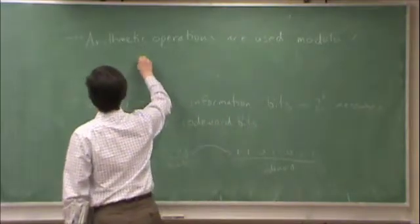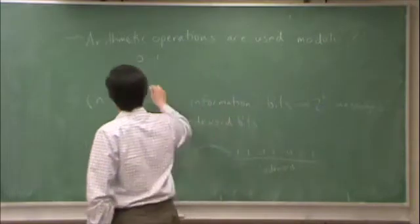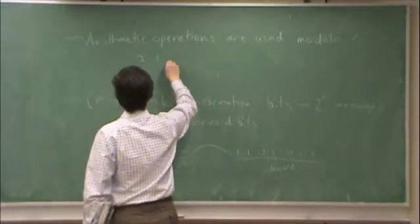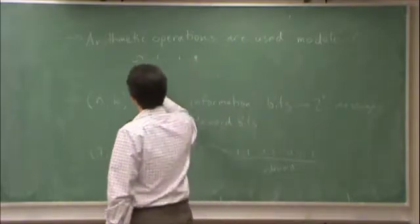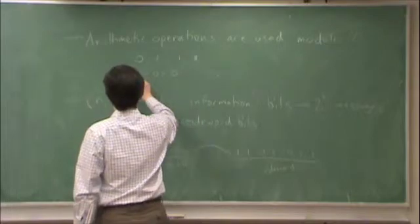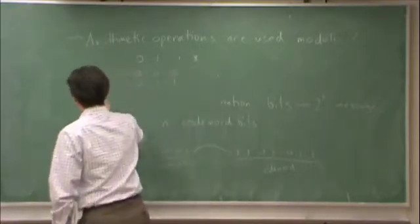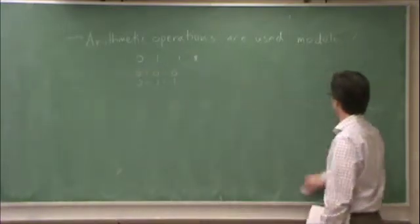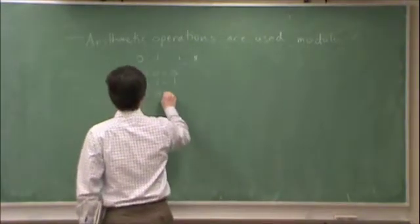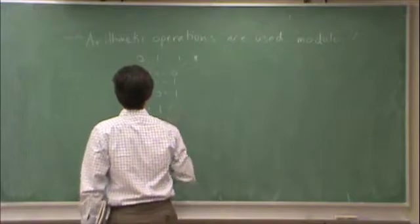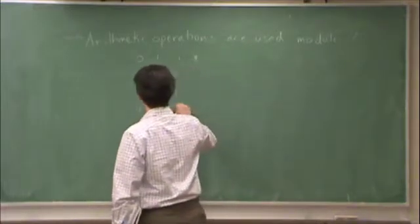We start with only two integers, 0 and 1. We have the operations plus and multiplication. For instance, 0 plus 0 is 0, 0 plus 1 is 1, 1 plus 0 is 1, and 1 plus 1 is 2 modulo 2. We're only allowed to use 0 and 1 here, so modulo 2 is 0.